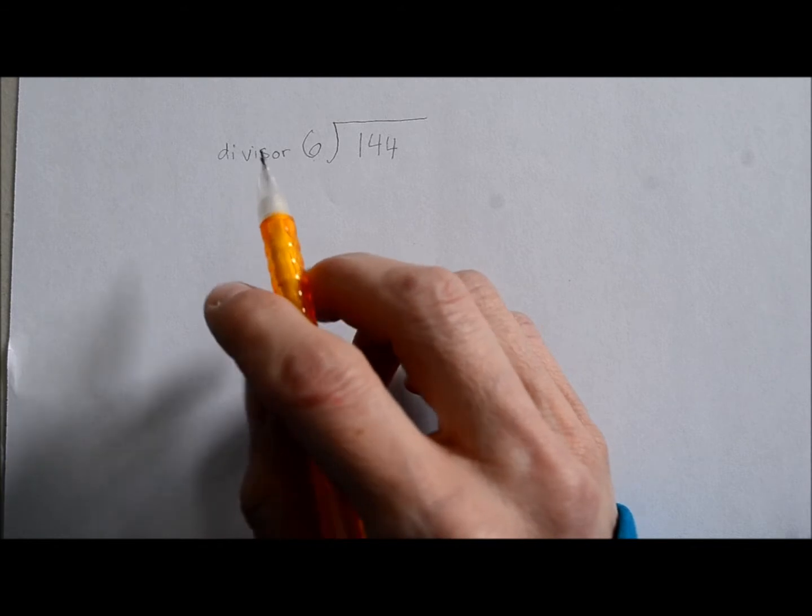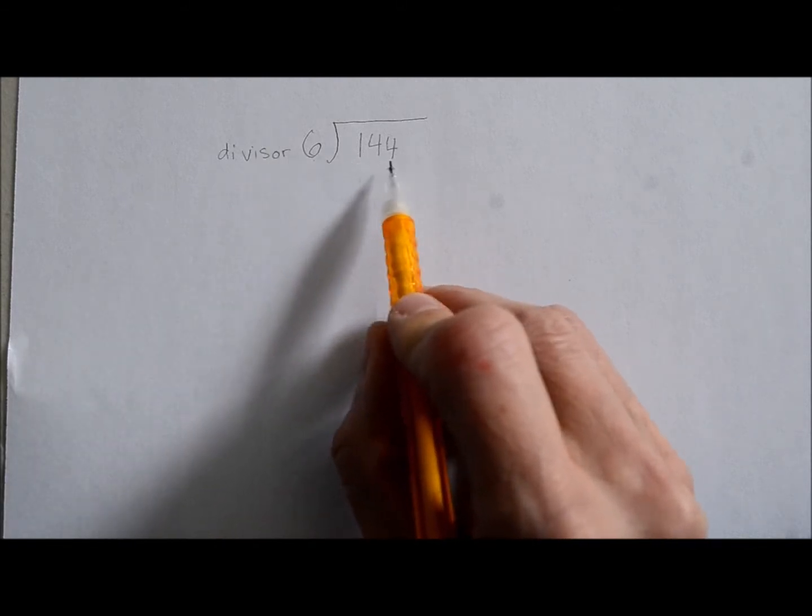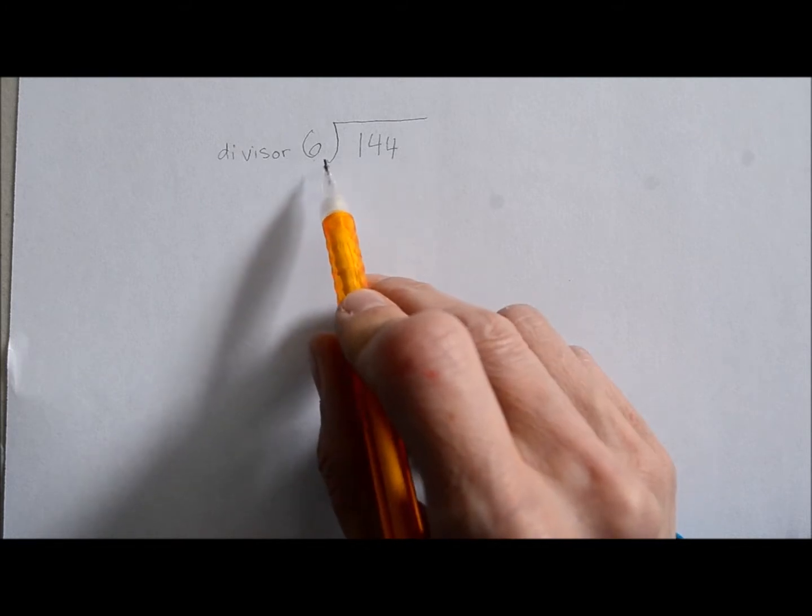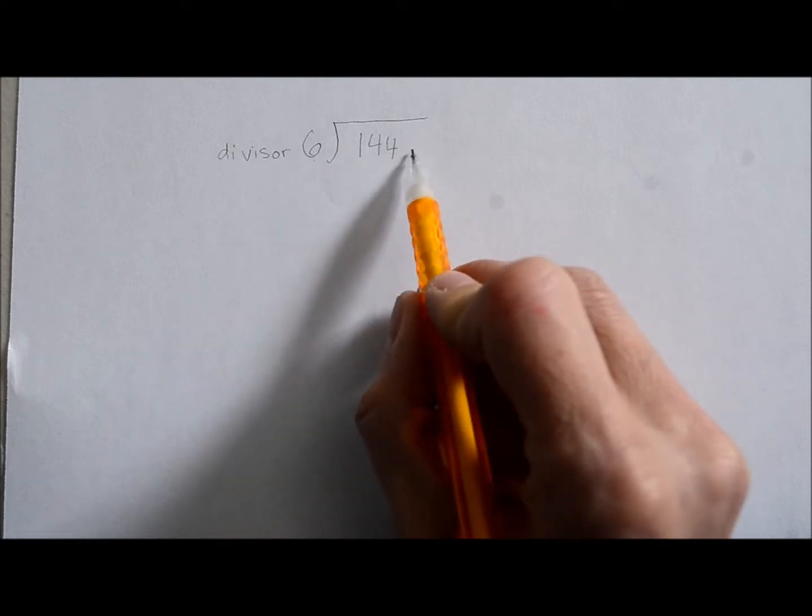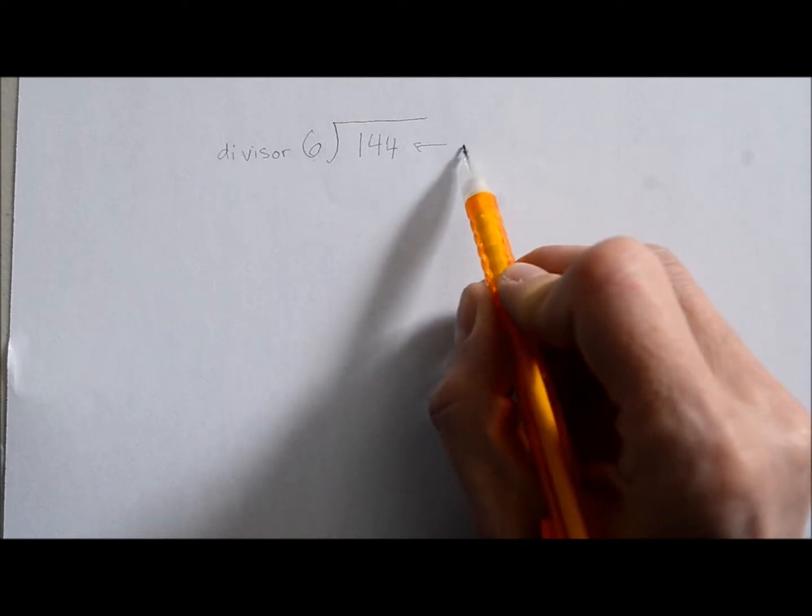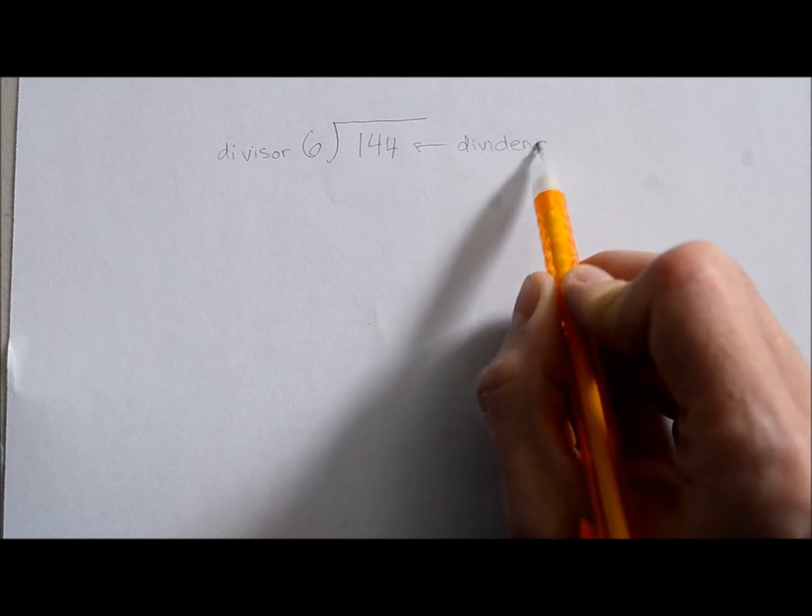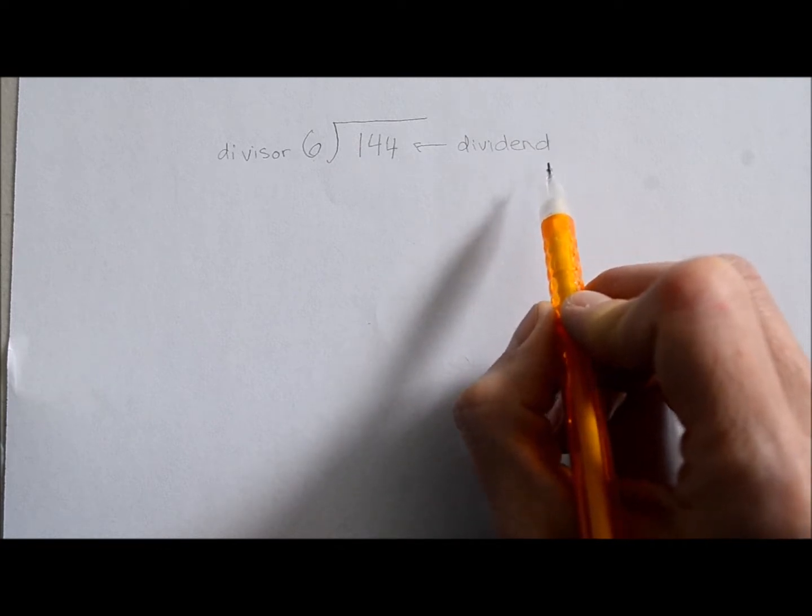The next one is going to be the dividend. This is the bigger number that you're dividing up into these groups. So we have, this is the dividend. Perfect.